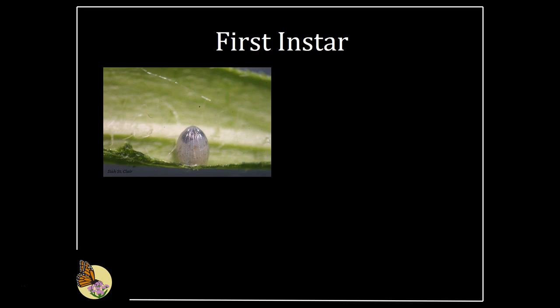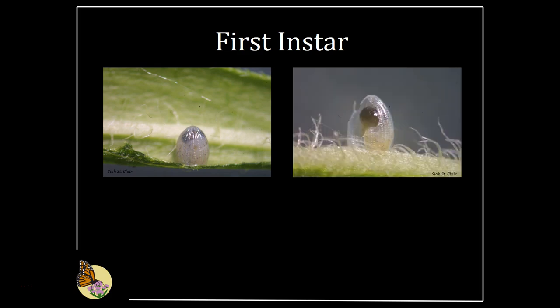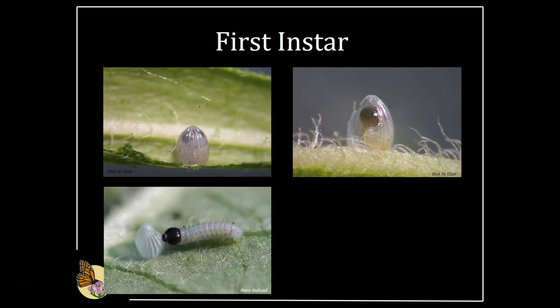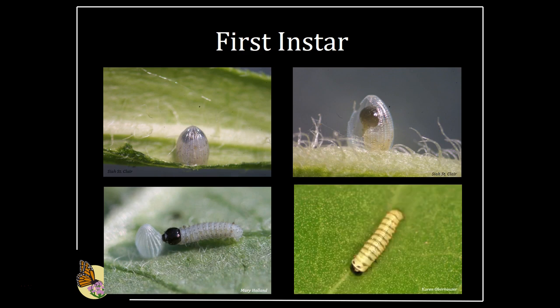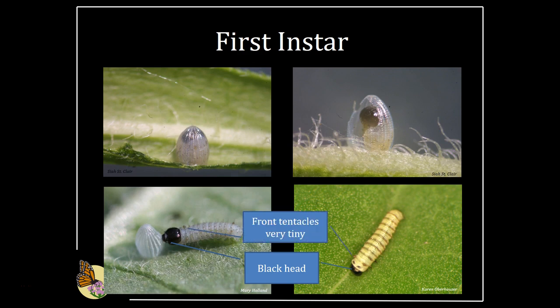On the day that the larvae is going to emerge from the egg, a black pigment develops on its head and the eggshell becomes thin and transparent, causing the egg to look black. The larvae chews its way out of the egg and consumes the rest of its eggshell as its first meal. Notice that the stripes are absent to barely noticeable in the first instar. The iconic black, yellow, and white striping develops as the monarch eats milkweed. Note the black head and the tiny, barely visible front tentacles — rear tentacles are practically absent. These are the key diagnostic features of the first instar.